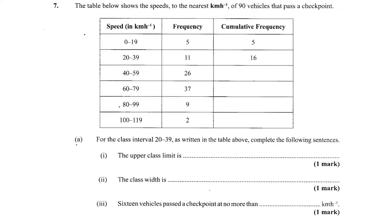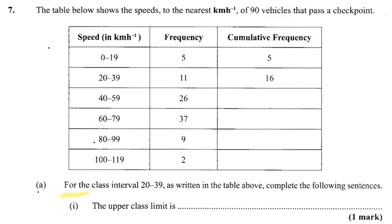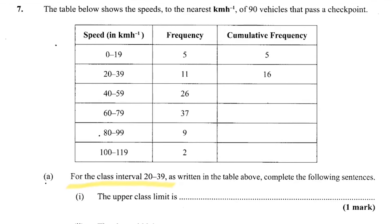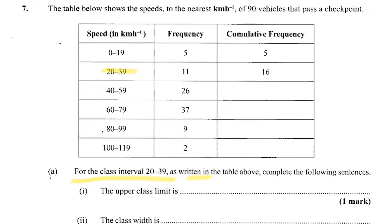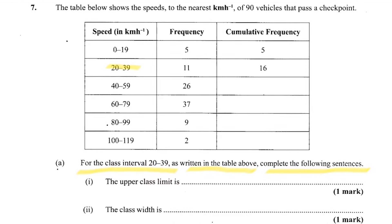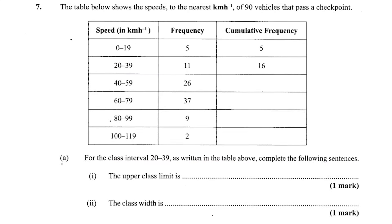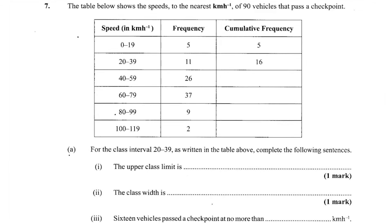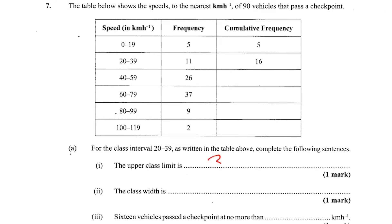Let's do some stuff here first. So for the class interval 20 to 39, as written in the table above, complete the following sentences - we are just looking at that class. The upper class limit is going to be 39. They said upper class limit, not upper class boundary. If it was boundary, it would be 39.5, but it's not boundary, it's limit.